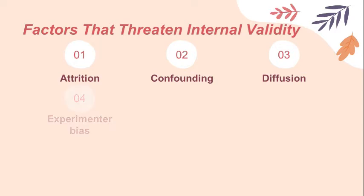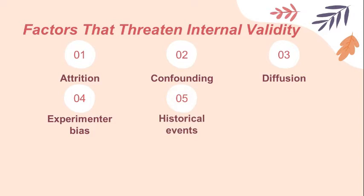The fourth is experimenter bias — an experimenter behaving in a different way with different groups in a study, which leads to an impact on the results. This is eliminated through blinding.